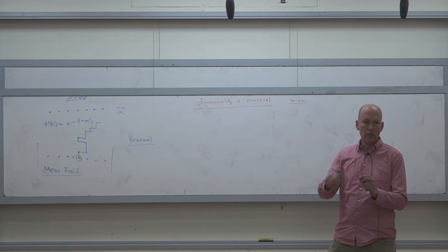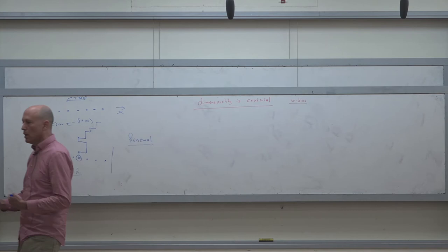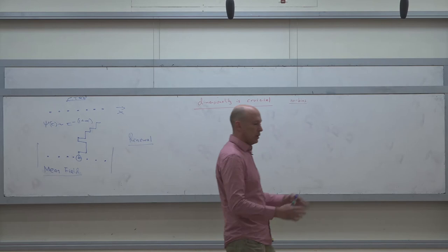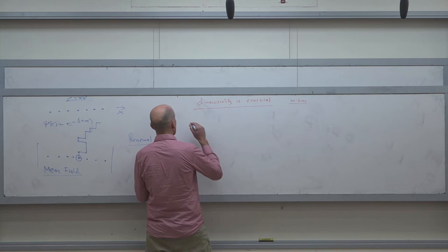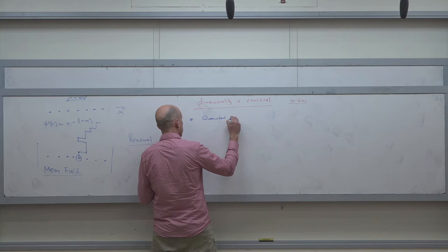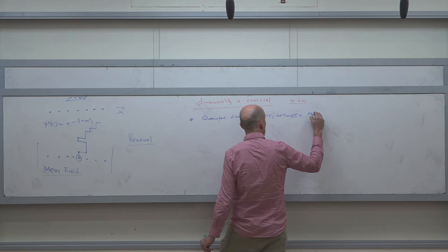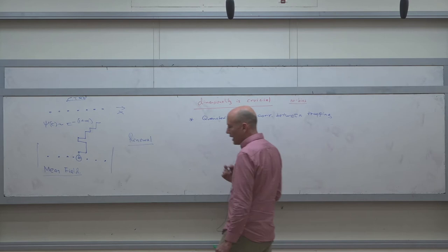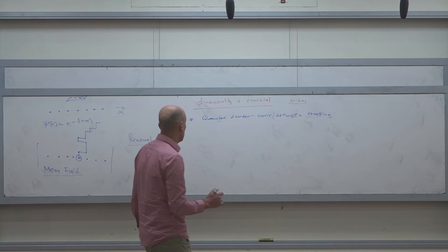In the quenched disorder, the particle can come back to the same trap it visited in the past — like this class being your trap: you come back every week and are trapped for three hours. So there is a correlation between your trapping time today and the trapping time one week ago — it's the same trapping time. In quenched disorder there is a correlation between trapping times, meaning there is no renewal. When are these correlations very important? The answer is in one dimension.